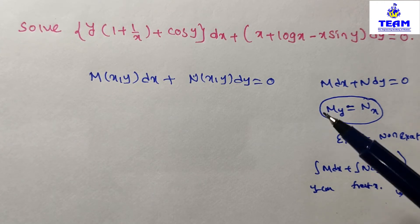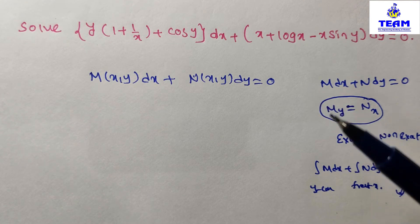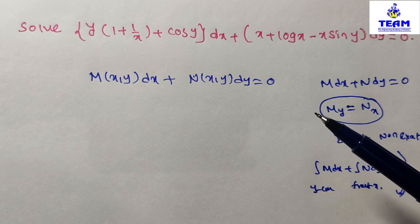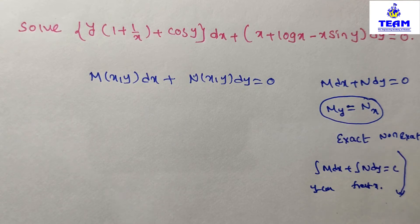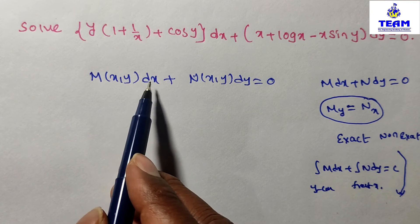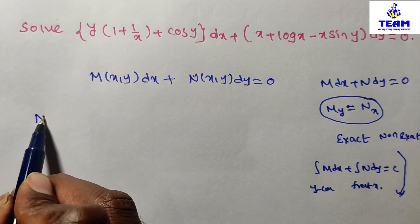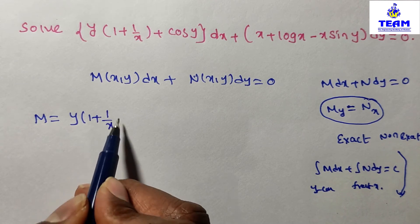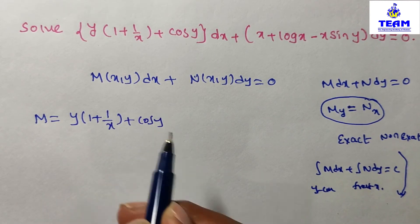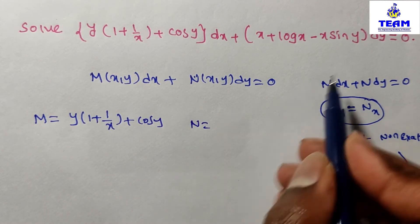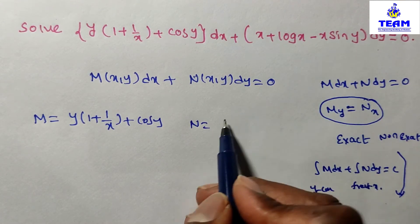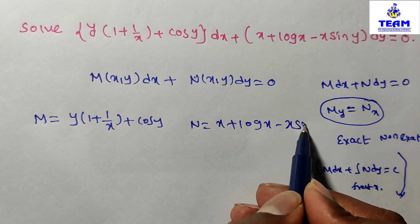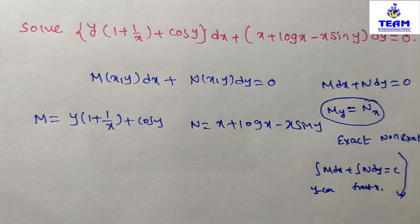First I am going to verify whether the given differential equation is exact or non-exact, and if exact, find the solution. From the given problem, M = y(1 + 1/x + cos y) and N = x + log x − x sin y.